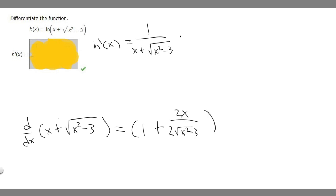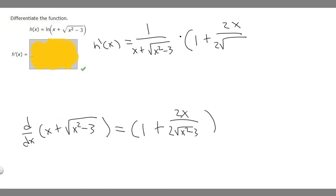Now that we have the derivative of the inside, we can rewrite our full answer. So h prime of x equals 1 over x plus the square root of x squared minus 3, multiplied by 1 plus 2x over 2 square root of x squared minus 3. And that is the answer to this question. Thank you.